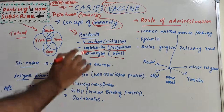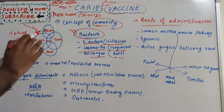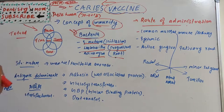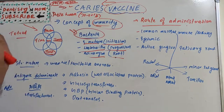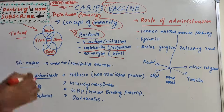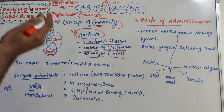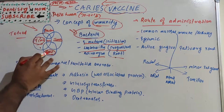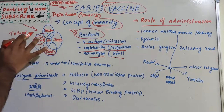Dental caries is a multifactorial disease. Host factors include the tooth, its position, saliva flow, malocclusion status, and personal oral hygiene. Diet factors include cariogenic food, sticky food, frequency of food intake, and the time food remains in the mouth. When all these factors — bacteria, tooth, food, and time — work together, dental caries is created.